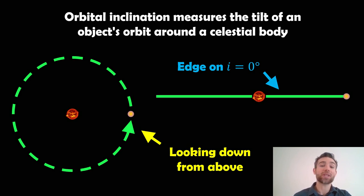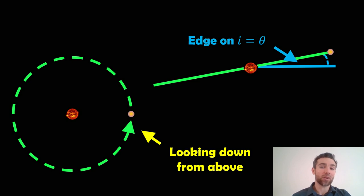If the orbit inclination is zero, there's no angle between the orbital plane and the reference plane. But if there is some angle, so here our blue line is our reference plane and our green line is our orbital plane, then there's some angle between the two.